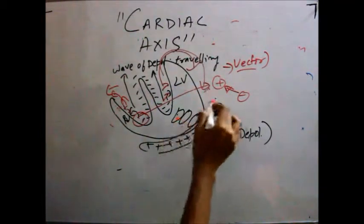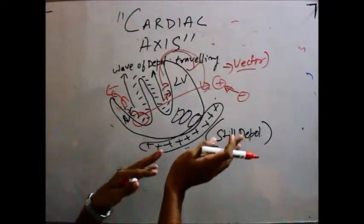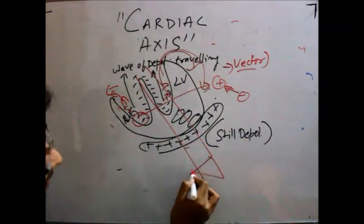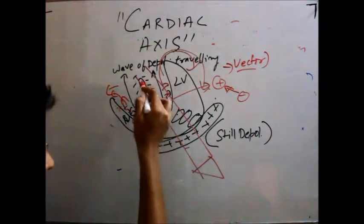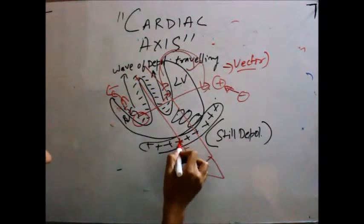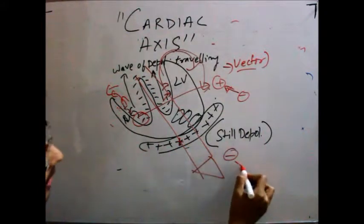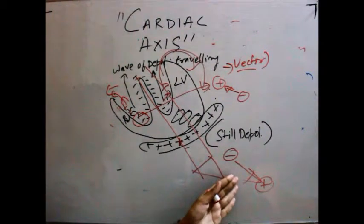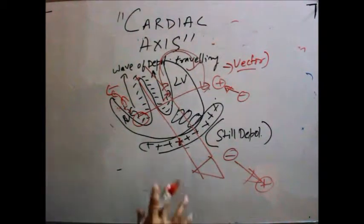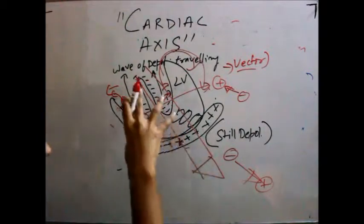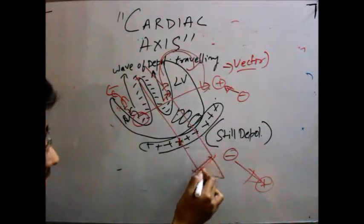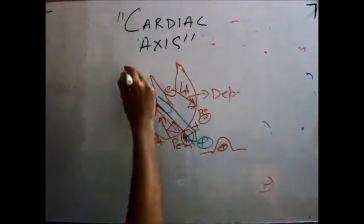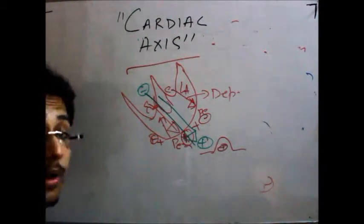By adding all those instantaneous vectors together, we get the final vector of the heart — the cardiac axis. As it acts as a dipole, this final vector is represented electronically in the signal as a direction. We have now obtained a clear idea of what the cardiac axis is and how it is represented. Thanks for viewing — goodbye.